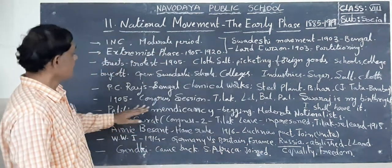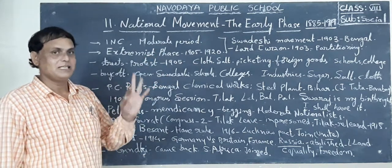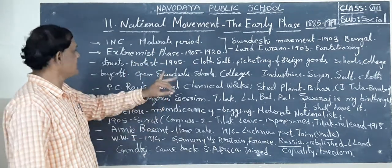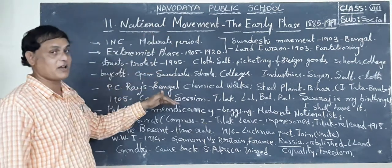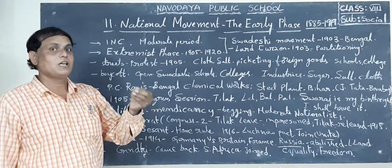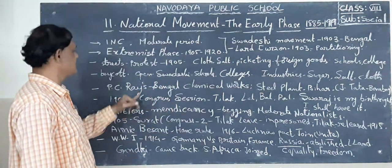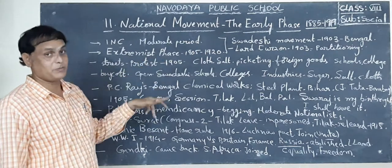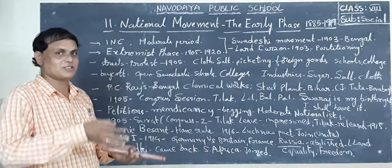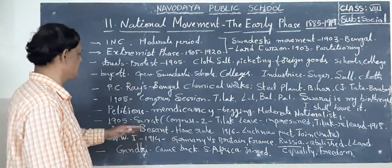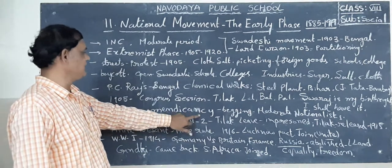Here, the first stage is the moderate period, and the second stage is the extremist stage. What is the method of this moderate period? Simply, they were showing petitions - giving alms, begging alms. It is called mendicancy. Like a beggar, they asked the British government what our requirements were.